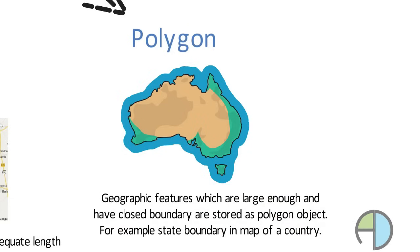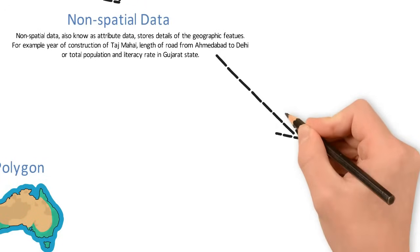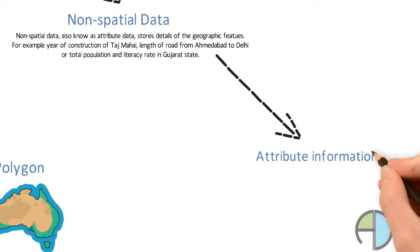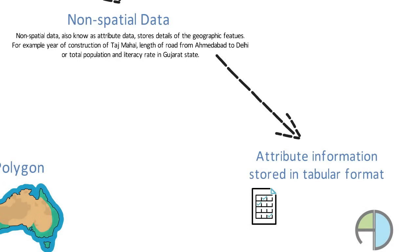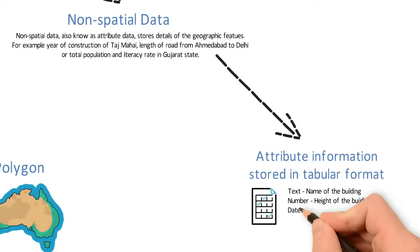Non-spatial data is also called attribute information. It is mostly stored in a tabular format in the database. There are various data types that are supported. For example, name of the building is stored as text. Height of the building will be stored as numeric and then construction date will be stored in date. Boolean is also one type of data type.